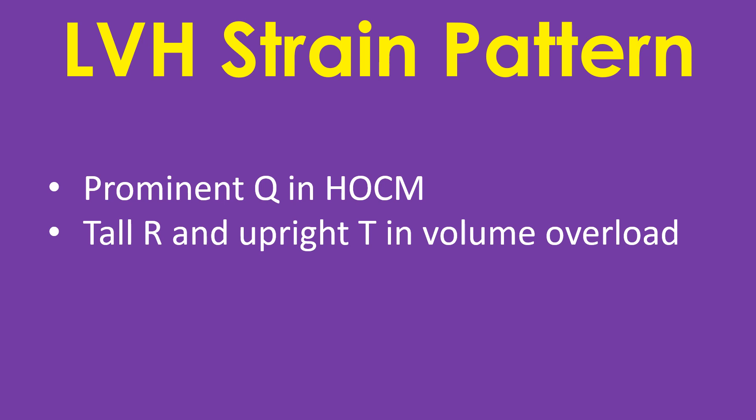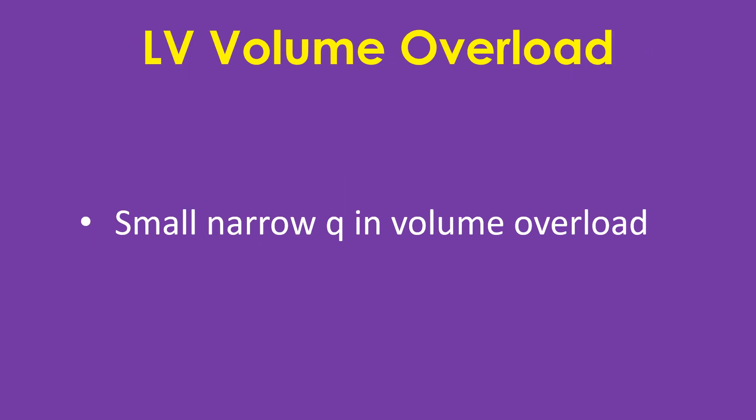In the volume overload pattern, ST segment depression and T wave inversion are not usually seen, while the R waves will be tall in lateral leads and the T waves will be upright and tall. A small narrow Q wave is also seen in volume overload patterns due to aortic regurgitation, patent ductus arteriosus, and ventricular septal defect with large left-to-right shunt.